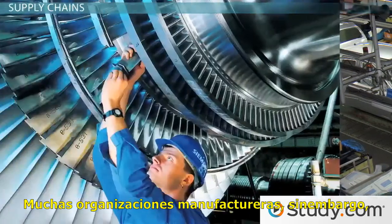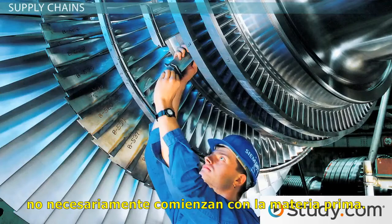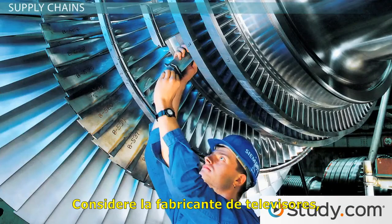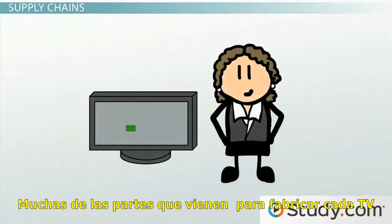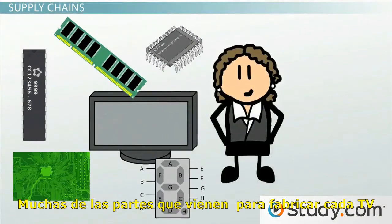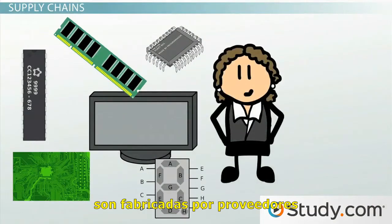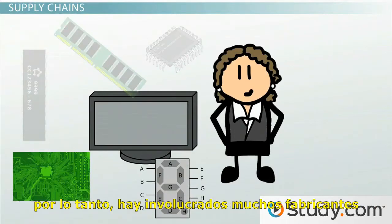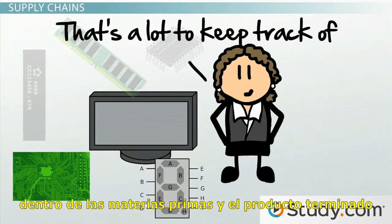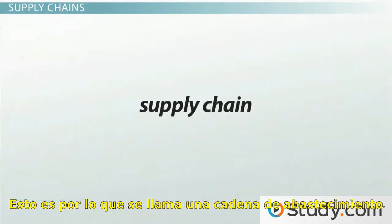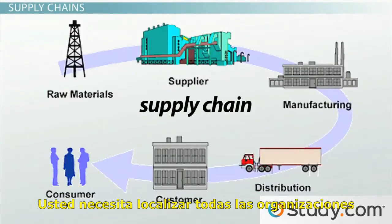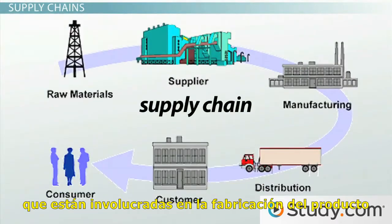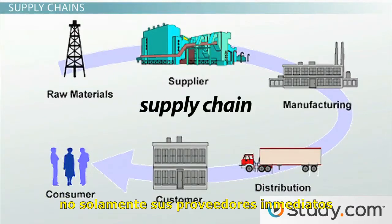SCM is widely used in the manufacturing sector where an organization acquires raw materials and turns them into finished products. Many manufacturing organizations, however, don't necessarily start off with raw materials. Consider the TV manufacturer — many of the parts that go into making each TV are manufactured by suppliers, and some of those parts may be manufactured by putting together parts from other suppliers. There can be quite a few manufacturers between the raw materials and the finished product. This is why it is called a supply chain — you need to look at all the organizations involved in making the product, not just your immediate suppliers.